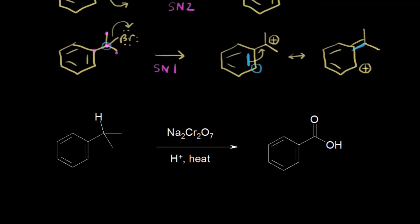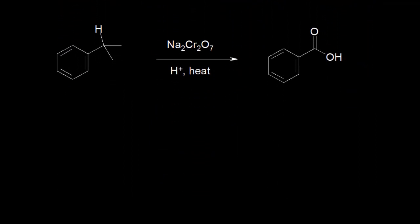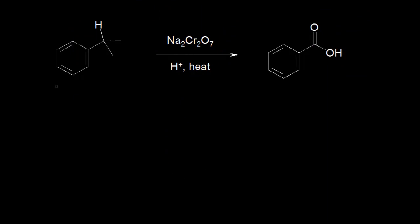Let's look at one more reaction: oxidation of alkyl benzenes. With my alkyl benzene — a carbon with a benzylic hydrogen and two other substituents — if I add sodium dichromate, a source of protons like sulfuric acid, and heat, I can oxidize my alkyl side chain to a carboxylic acid functional group, giving benzoic acid. You could also do this oxidation with permanganate and heat.